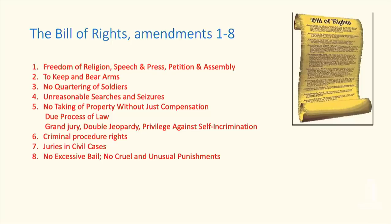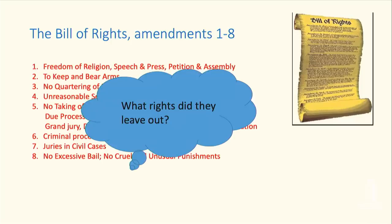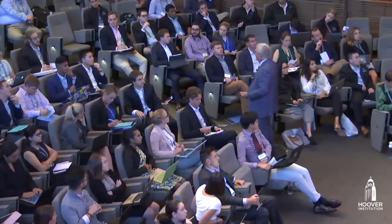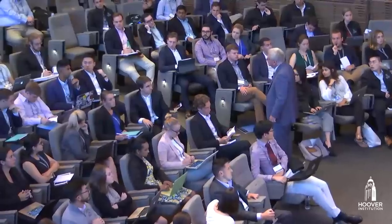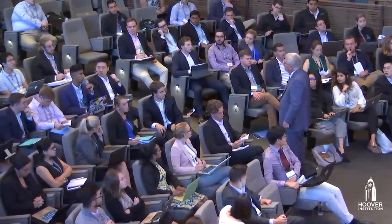So here's the list they came up with — what did they leave out? If you were doing this, what do you think should be there? Well, I guess looking at the rest of the Constitution, I would say the 14th Amendment today is pretty important. When you say the 14th Amendment, you mean the due process clause. The Fifth Amendment due process clause applies to the federal government; the 14th Amendment due process clause applies to the state governments.